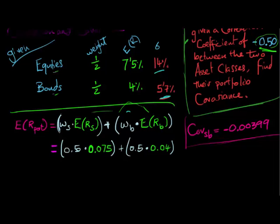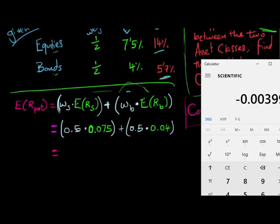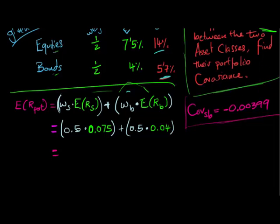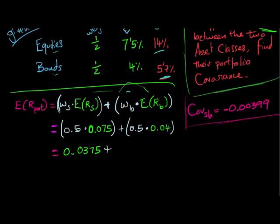And now we simply have to follow through. So half of 7.5% is 3.75%. So the stocks are 0.0375. Half times 4% is 2%. So add the two together and the expected return of the portfolio is equal to...